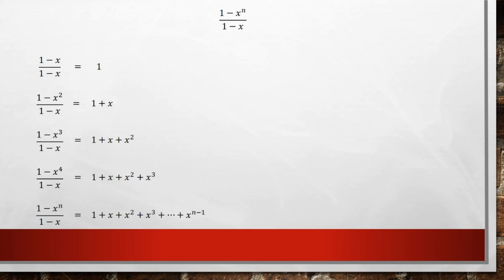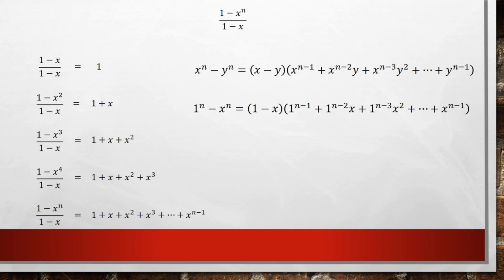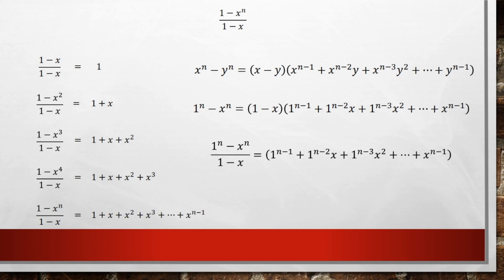Another way to look at this is to use the formula from the beginning. Using the formula for x to the n minus y to the n, I can plug in x equals 1 and y equals x. Then I divide both sides by 1 minus x. At this point, I see that I have 1 to the power of n, 1 to the power of n minus 1, n minus 2, etc. — and 1 to any power is just 1. So making that replacement, what I end up with is 1 minus x to the n over 1 minus x equals 1 plus x plus x squared all the way up to x to the n minus 1, which is exactly the same result.